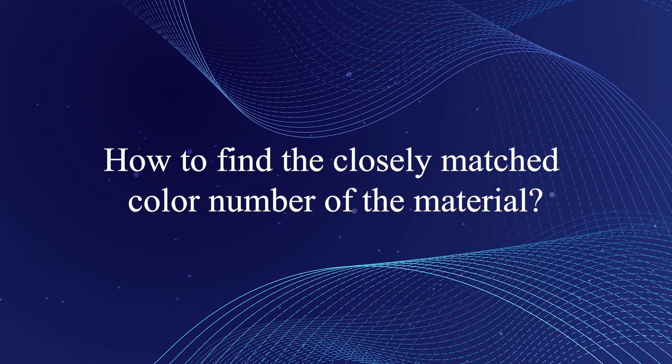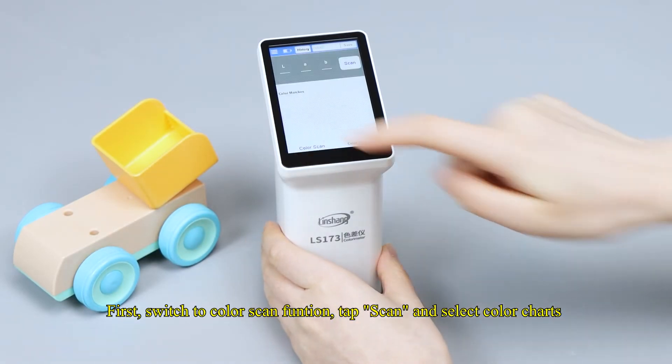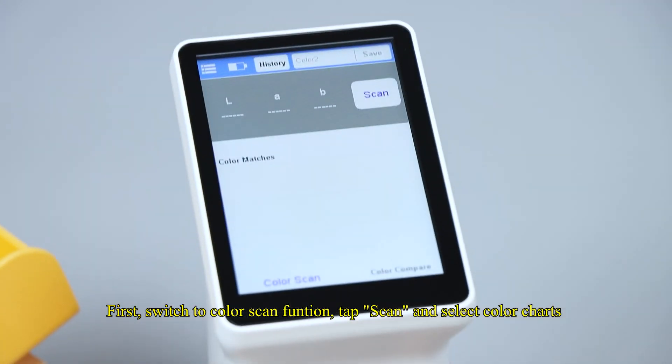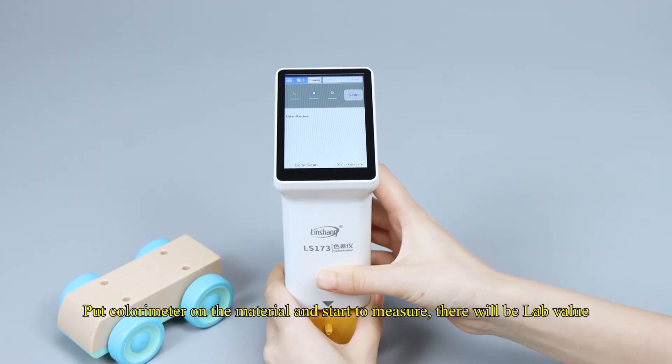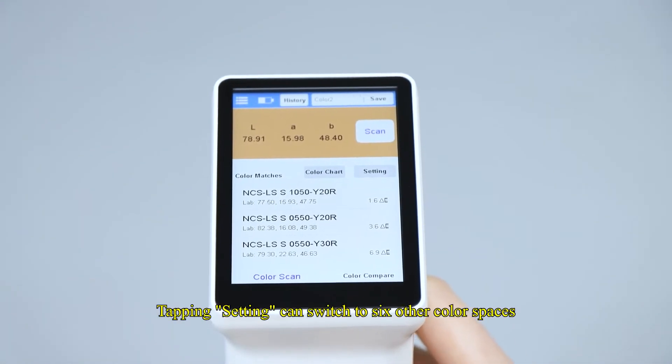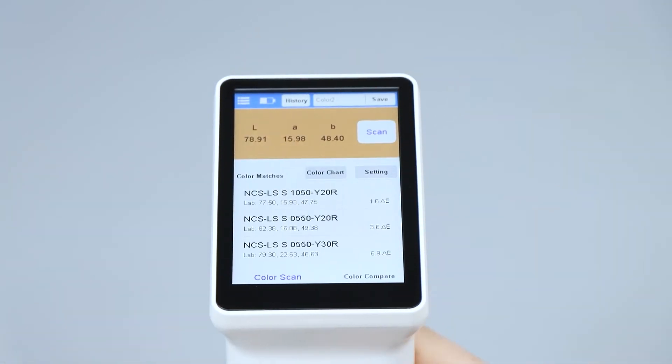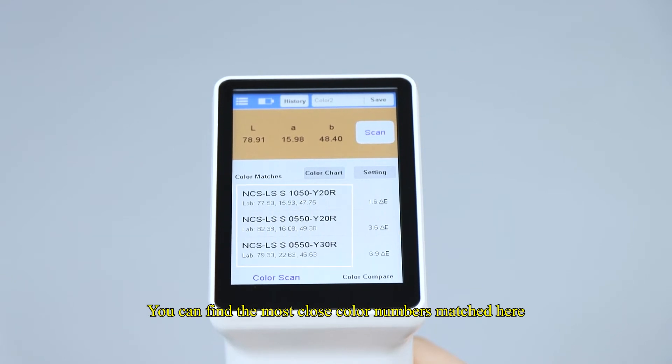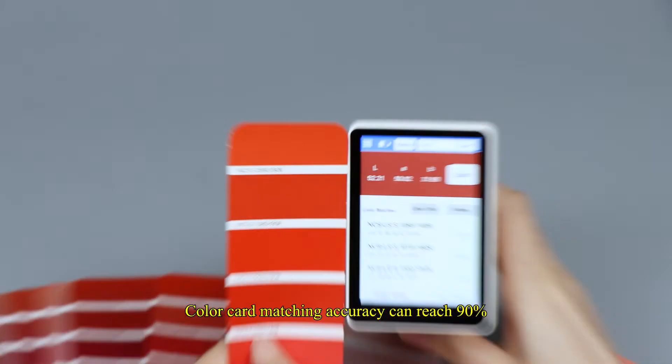How to find the closely matched color number of the material. First, switch to color scan function, tap scan and select color charts. Put colorimeter on the material and start to measure, there will be LAB value. Tapping setting can switch to six other color spaces. You can find the most close color numbers matched here. Color card matching accuracy can reach 90%.